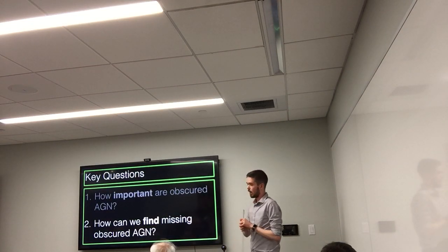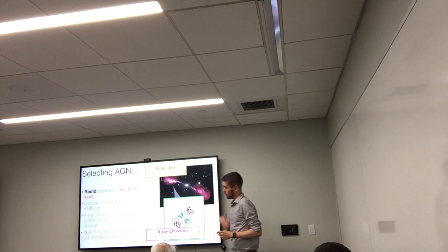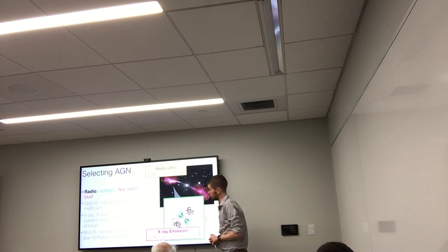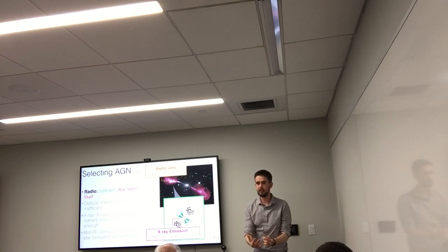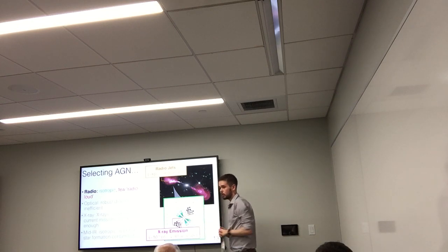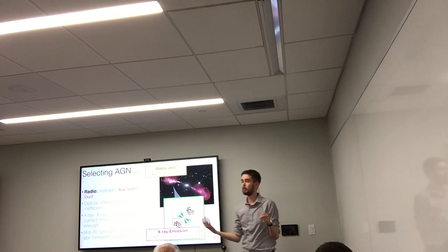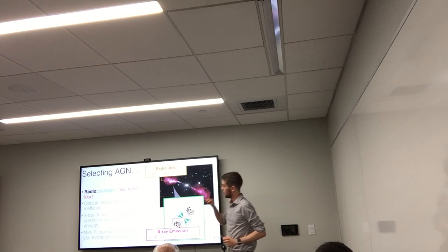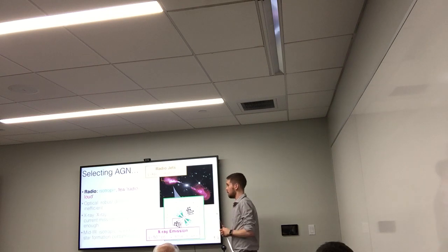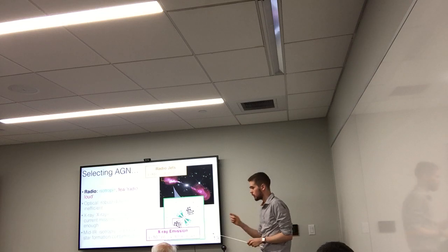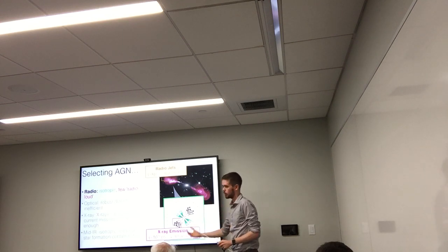Now onto the second question: how can we find these missing Compton thick AGN? In terms of selecting AGN sources, you can choose different sections of your spectral energy distribution. In the radio, the emission is typically for radio-loud AGN — there's a low optical depth and you're less affected by high column density, so it's an isotropic, unbiased observation. But at the other end of the spectrum, you have very few radio-loud sources. Current work predicts that it's around 10%, but people don't really know if that's an intrinsic fraction or just another bias that needs to be corrected.